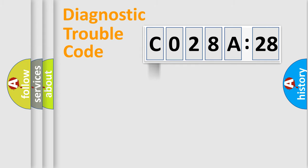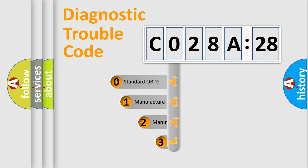Powertrain, Body, Chassis, Network. This distribution is defined in the first character code.